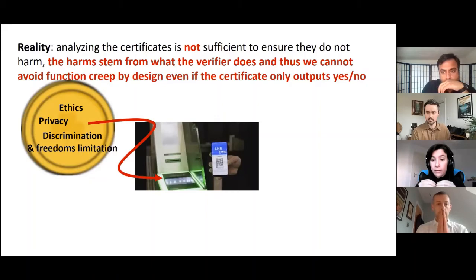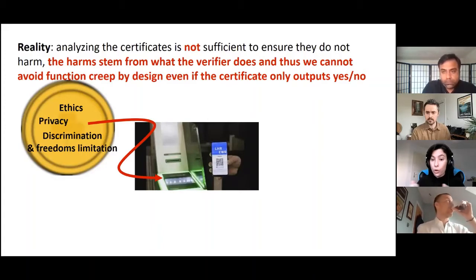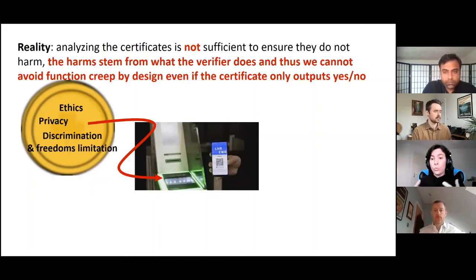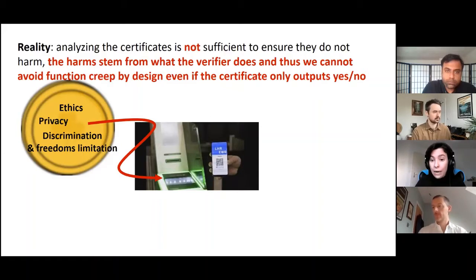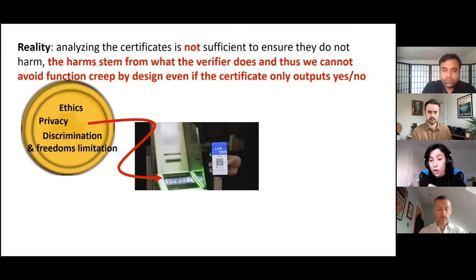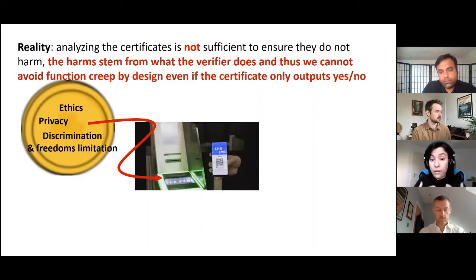Trying to look only at the certificates and limit this conversation narrowly is making us lose sight of the actual goal. It's very important to realize that because the harms stem from the verifier — and the verifier is not really part of the certificate or the protocol — we have a lot of obsession about what will be in the certificate. But even if we have just a yes or no, that does not mean we'll prevent any of the harms. The tricks we used for contact tracing apps to minimize data in order to avoid harms do not apply to immunity certificates, because it's not about what the certificate reveals.